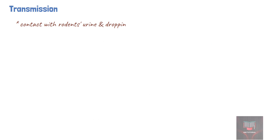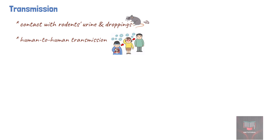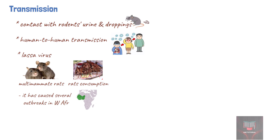Infections generally occur via contact with rodent urine or droppings. Some viruses can also cause human-to-human and nosocomial infections. Lassa virus spreads efficiently mostly through direct contact with multimammate rats, but when rodents are captured for consumption, it has caused outbreaks in West Africa with case fatality rates as high as 50%. Bunyaviruses are generally transmitted via arthropods and rodents.